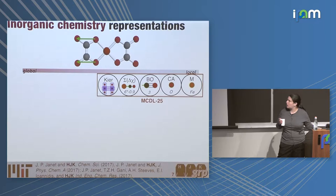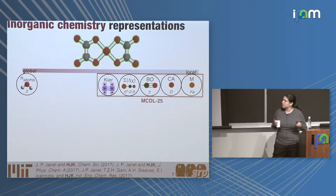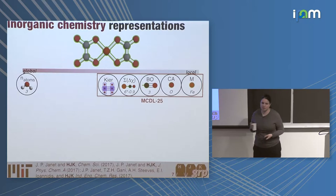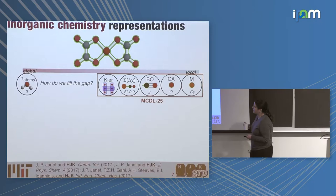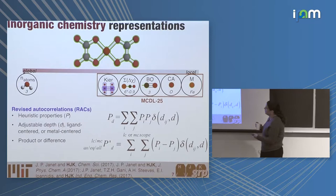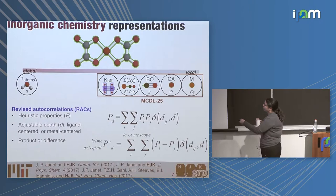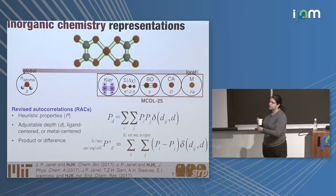But there were other things — when people are focused on atomization energies, things like the number of atoms in the system matter a lot. We'd essentially thrown out those things with this representation. It was very ad hoc, and we wanted to go back and fill in the gap systematically. The way we ended up doing this was by reviving something from the 1980s: Moreau-Broto autocorrelation functions — discrete products and differences on the molecular graph of heuristic properties, very similar in spirit to graph convolutions. But what they do is take that convolution out of the model, so these features can be used to train a wide range of models, including simple things like kernel ridge regression.